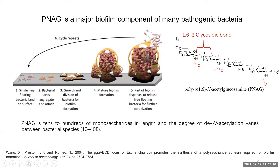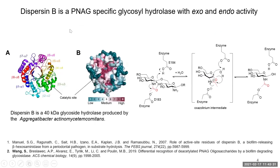In the biofilm, one of the major components is the exopolysaccharide — a poly-beta-1,6-linked, partially-acetylated glucosamine. The only enzyme known to be involved in dispersing the biofilm is Dispersin B. Dispersin B is a 40 kilodalton glycosylhydrolase belonging to family 20. The active site of this enzyme is located in the center of its eight alpha and beta subunits, and it employs a substrate-assisted mechanism. The acetyl group at the second position participates to form an oxazolinium intermediate, and water comes in to produce the hydrolyzed product.